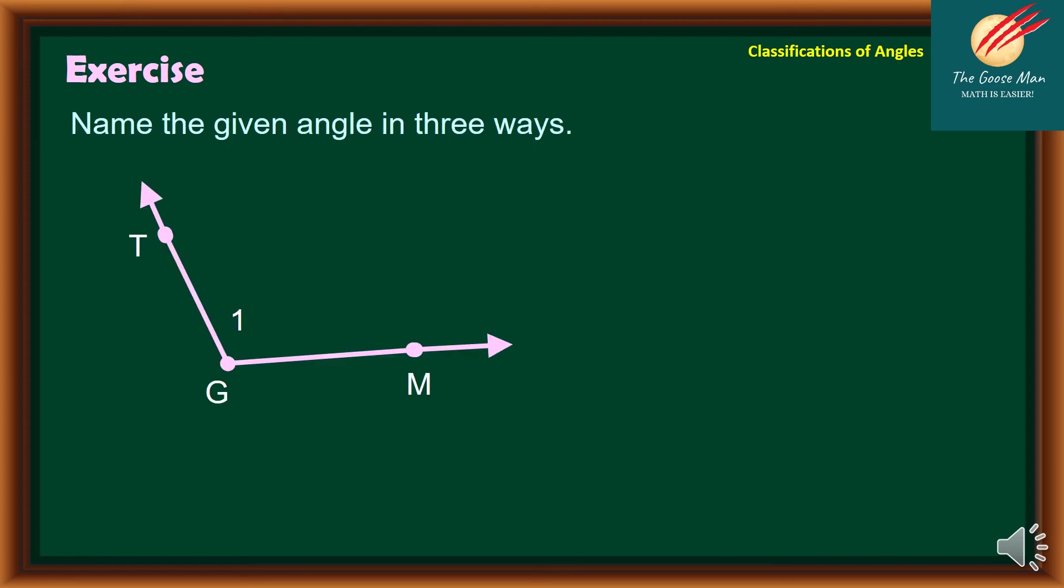Let's move on to the next exercise. Name the given angle in three different ways. We have our illustration here on the lower left side. We have here angle TGM. Recall that there are three ways to name an angle. The first one is through three letters, so we have here angle TGM or angle MGT.